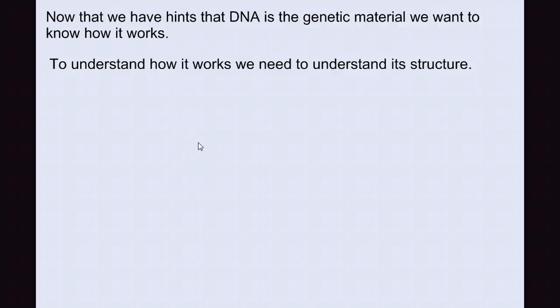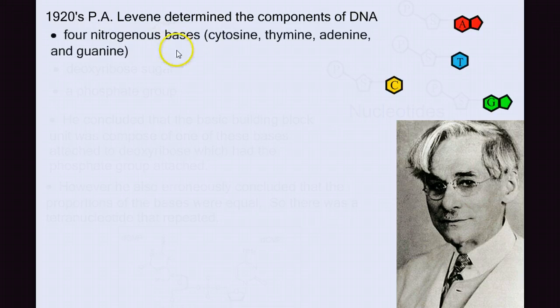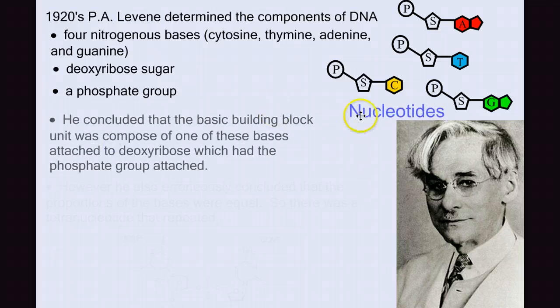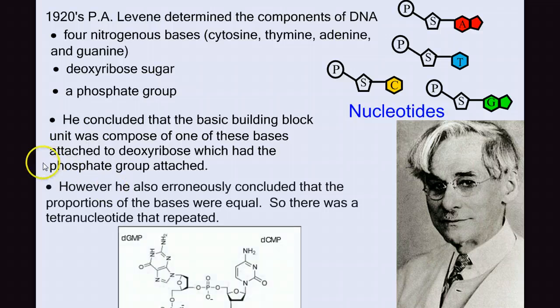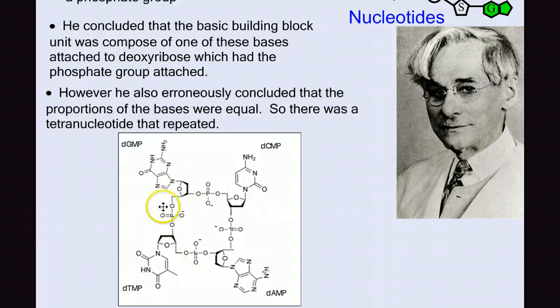Now that we have hints that DNA is the genetic material, we want to know how it works. But to understand how it works, we need to understand its structure. So we need to back our story up and go back to the 1920s when P.A. Levine determined the components of DNA. He found that DNA was composed of four different nitrogen bases, cytosine, thymine, adenine, and guanine, attached to a deoxyribose sugar, and a phosphate group. He concluded that these nucleotides were the building blocks of DNA. However, he erroneously concluded that the proportions of the bases were equal. So he proposed a tetranucleotide.